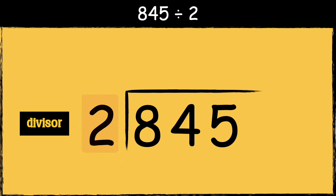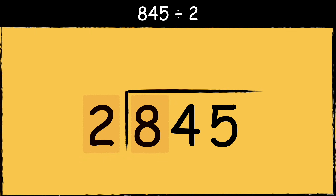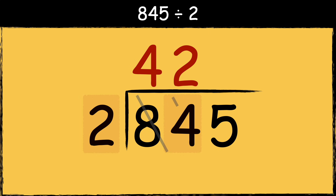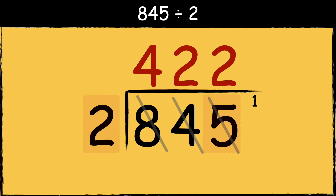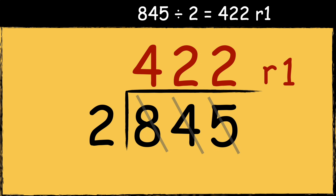So we need to find out how many times the divisor fits into these numbers. Two goes into eight four times. Two goes into four twice. And two goes into five twice with one left over. As there are no more numbers left to divide, the leftover one is the remainder. So the answer is 422 remainder one.